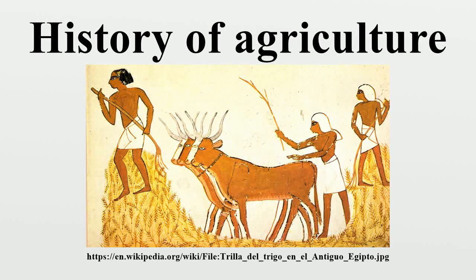Agriculture involves the domestication of plants. Data from molecular and archaeological research generated over the past 15 years now makes it clear that agriculture began independently over a much larger area of the globe than was once thought, and included a diverse range of taxa. At least 11 regions of the Old and New World were involved as independent centers of origin, encompassing geographically isolated regions on most continents, but several more have been suggested.